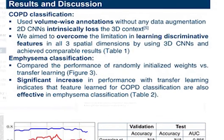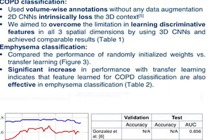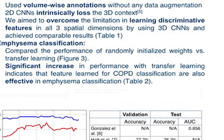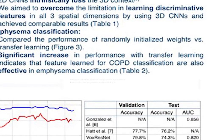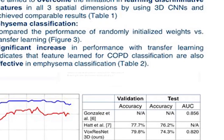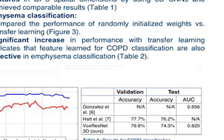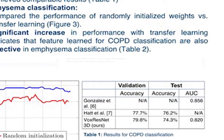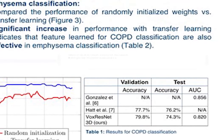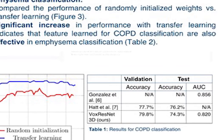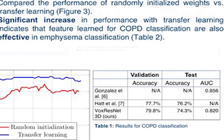As 2D CNNs intrinsically lose the 3D context, we aimed to overcome this limitation by learning discriminating features in all three dimensions using 3D CNNs, and achieved comparable results. We achieved 74.3% accuracy and 0.820 AUC.